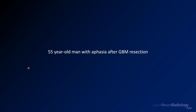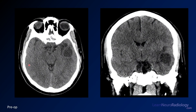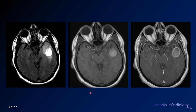Here's a case example. This is a 55-year-old man with aphasia who had a glioblastoma resection. Here is his pre-op imaging — you see a low-density lesion with some peripheral hyperdensity in the left temporal lobe on coronal CT. On the pre-op MRI, there are some necrotic blood product areas and some enhancement. He has this tumor in his temporal lobe.